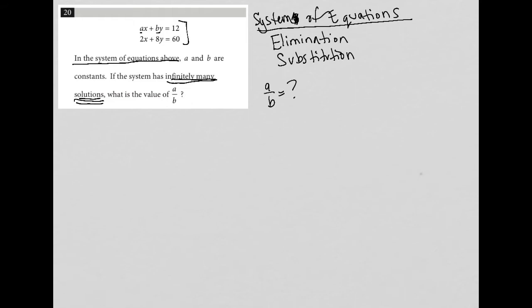That means that the two equations are equal to each other. So AX plus BY equals 12. We have to somehow make that equal to 2X plus 8Y equals 60. So how do we do that? We do that.